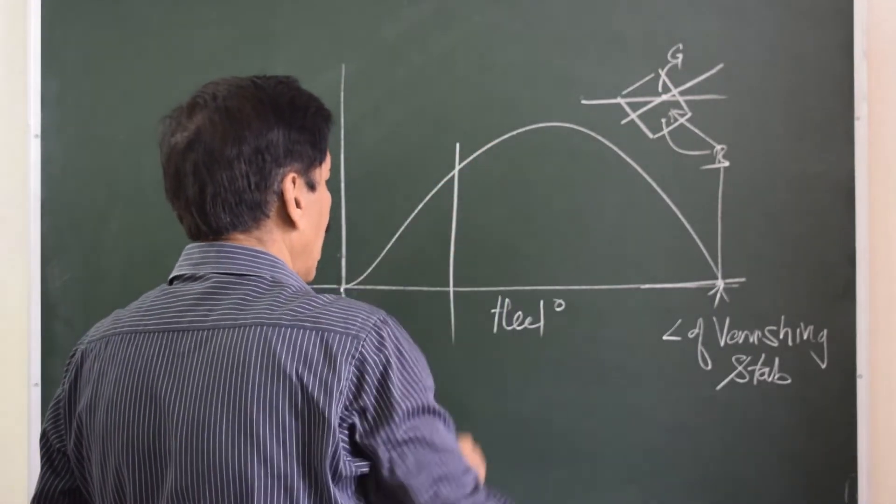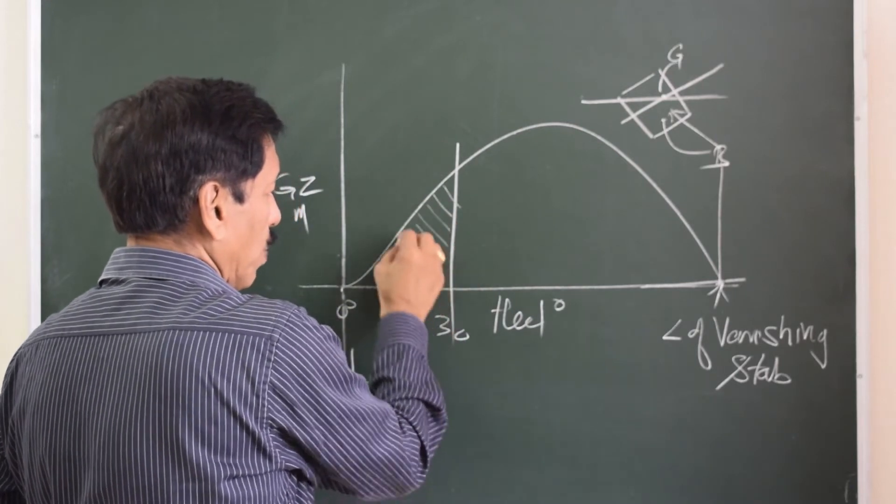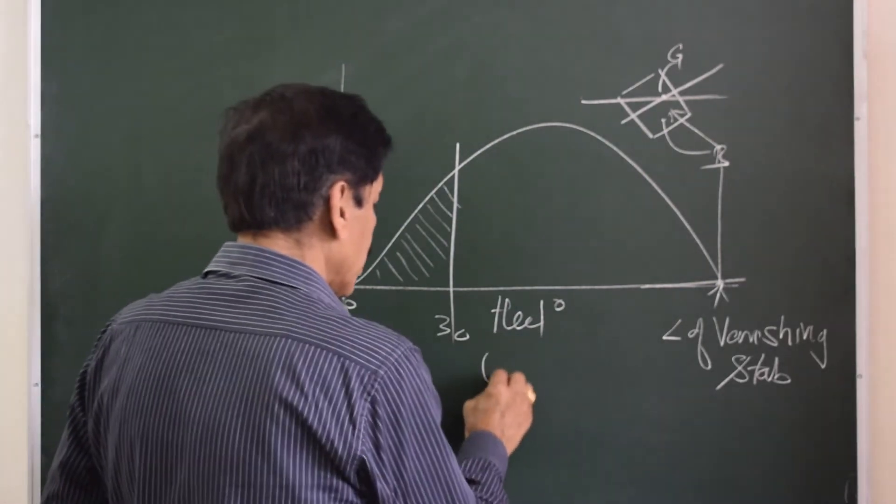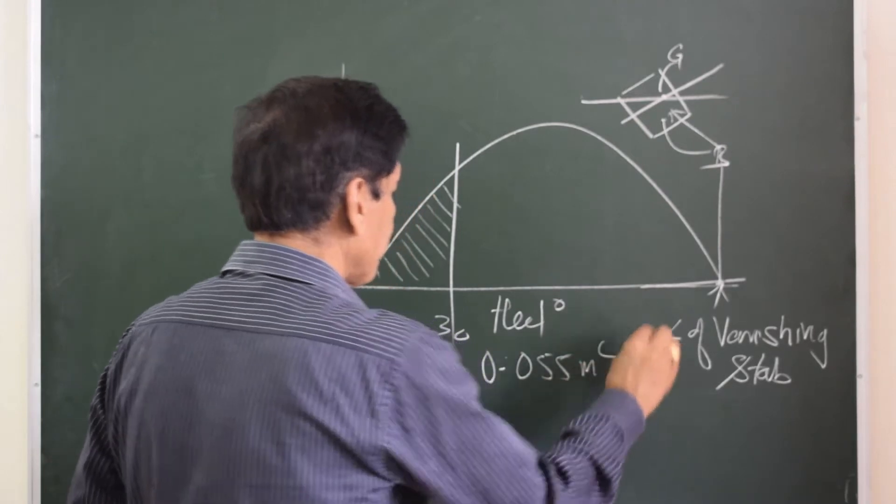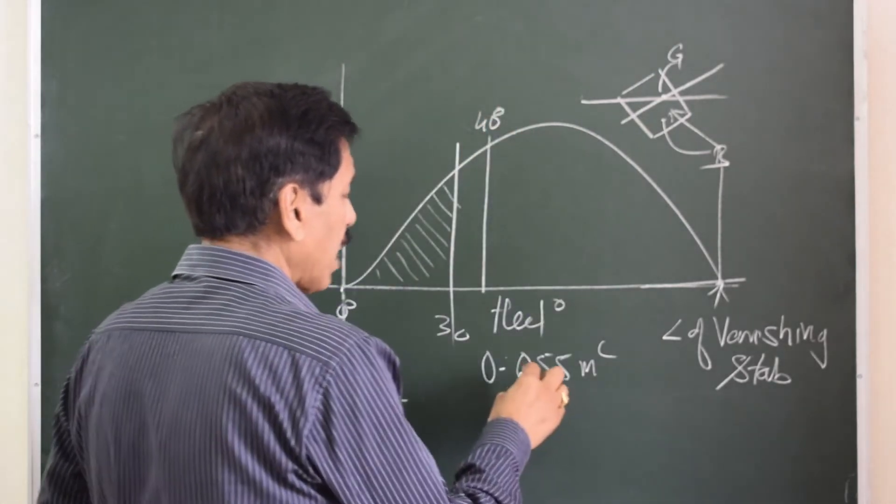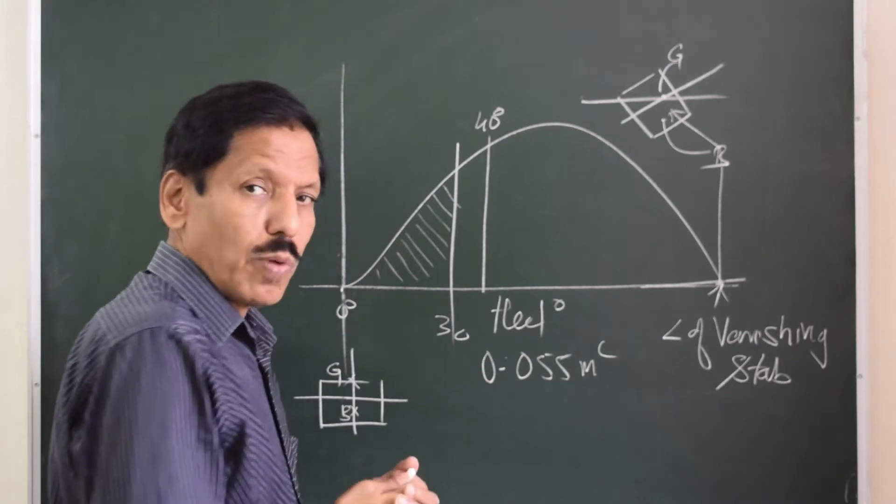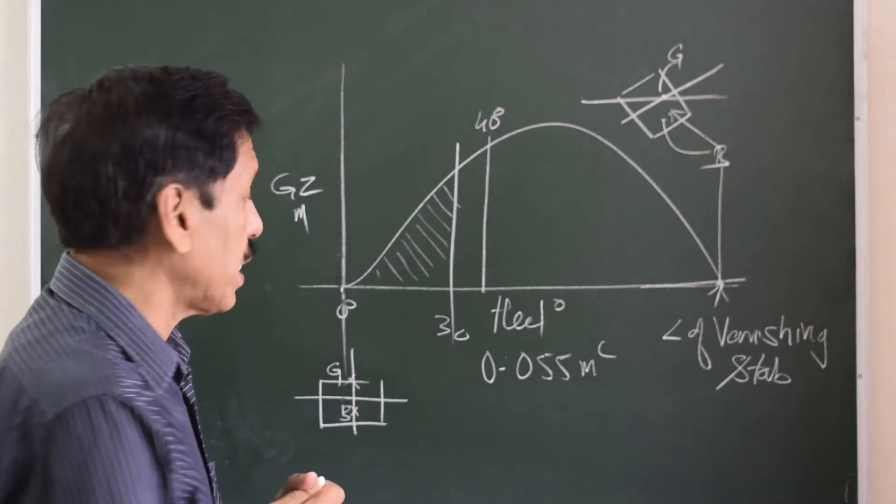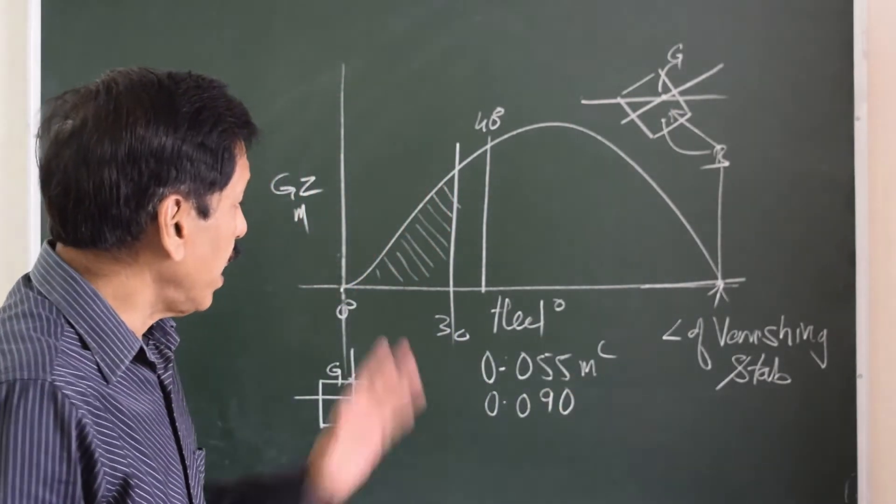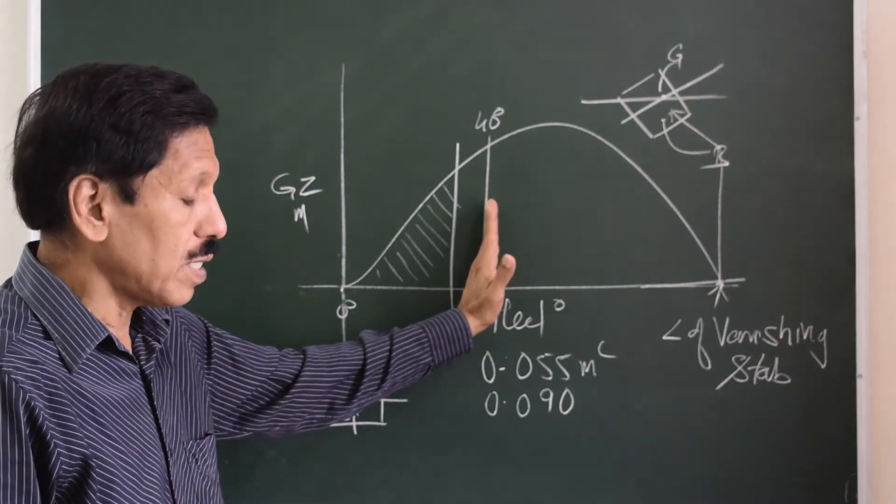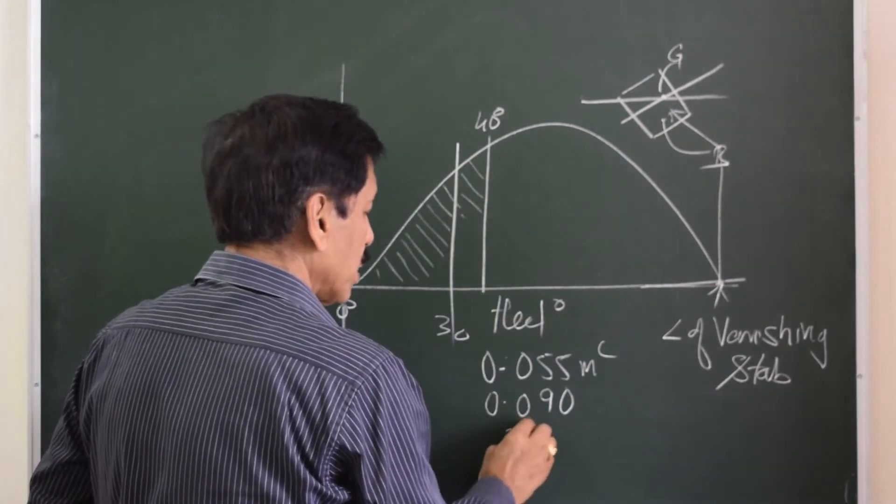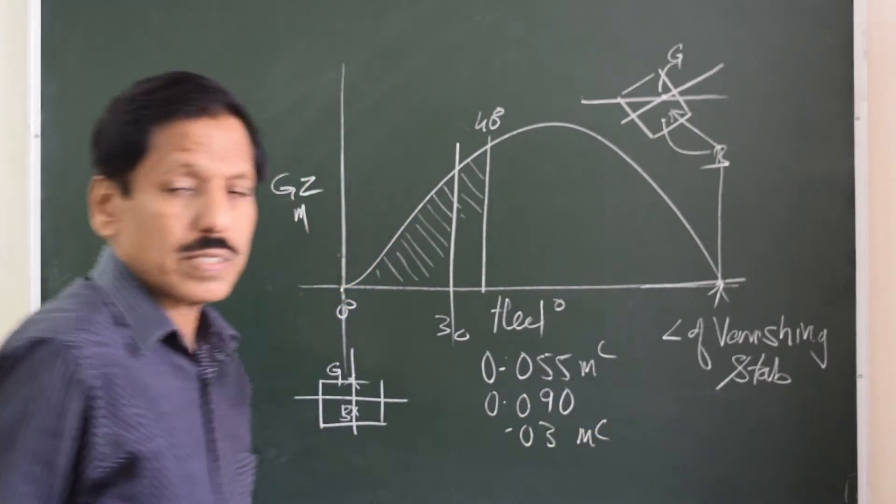Let's look at these criteria one by one. The area under the curve up to 30 degrees—that is, if you calculate this area normally found by Simpson's rules—should be at least 0.055 meter radians. And that area up to 40 degrees, or the angle of flooding if it is a smaller angle, should be 0.090 meter radians. And area between 30 degrees and that second angle—40 degrees or angle of flooding, whichever is smaller—that area should be 0.03 meter radians.